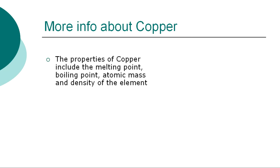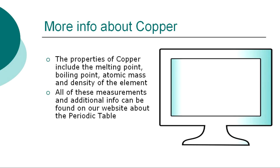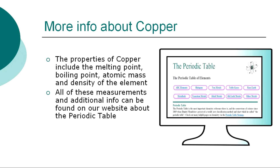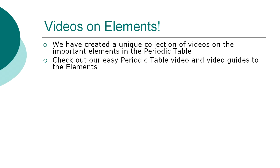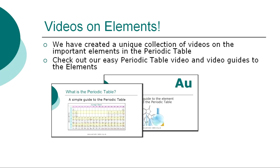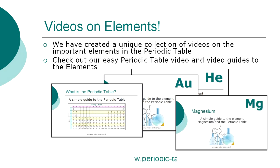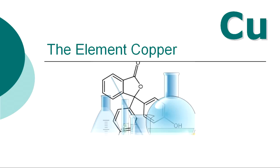The properties of copper are classified by many other factors, including the melting point, boiling point, atomic mass, and density of the element. All of these precise measurements, together with additional facts and information, can be found on our website. So ends our simple guide to the element copper. We have created a unique collection of videos on many other important elements that have been developed to enable chemistry students to gain a fast overview of the properties of each of the elements, together with their discovery and history. Check out our easy video guides to the elements via our website.